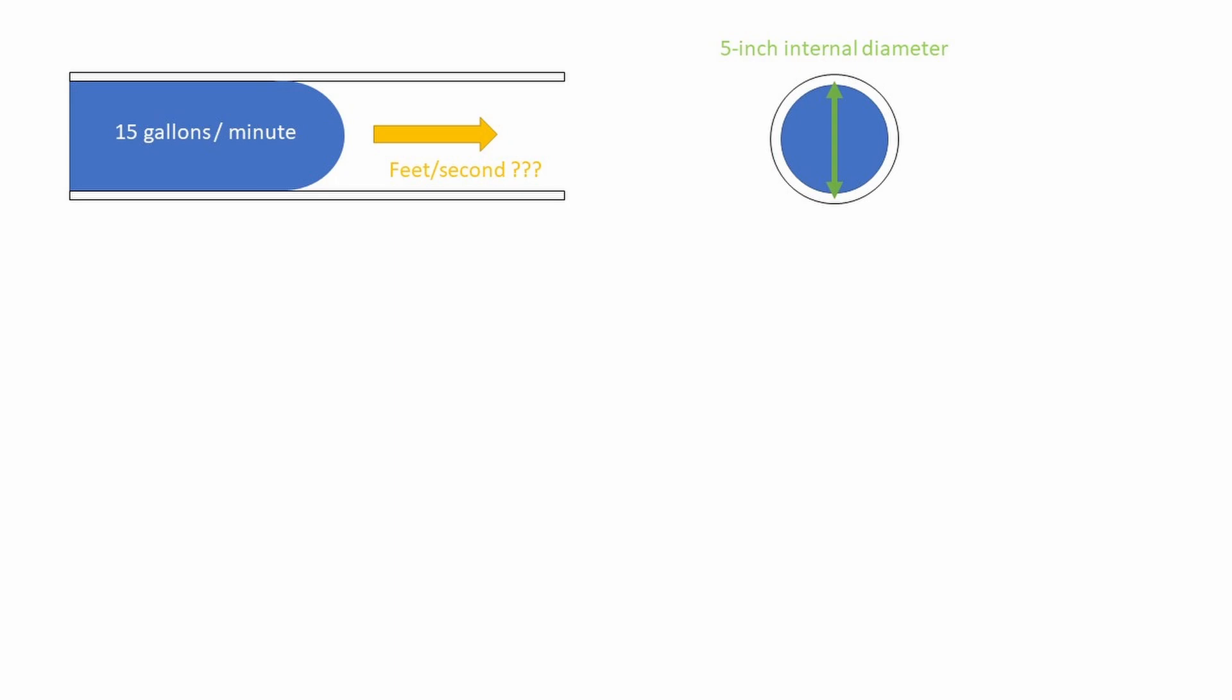First, we have fluid flowing through a pipe at a rate of 15 gallons per minute. This pipe has an inside or internal diameter of 5 inches, and we want to find the water's velocity in feet per second.